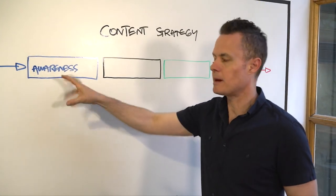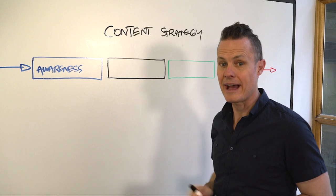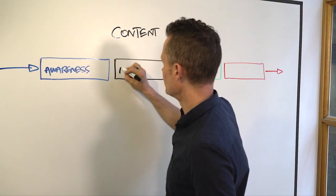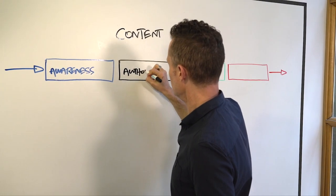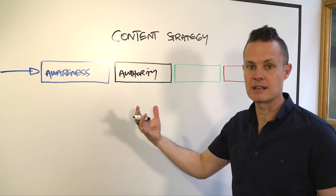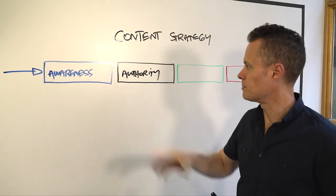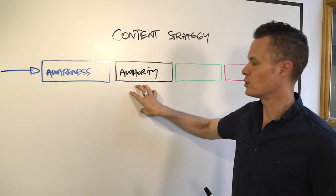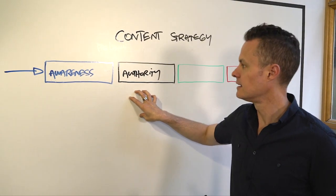Once you've stirred up the awareness and you've made them aware that they have a problem, the next thing you want to do is position yourself or your client—I know some of our audience will be selling content strategy to their clients—you want to position you or your business or your client as the authority in this space.